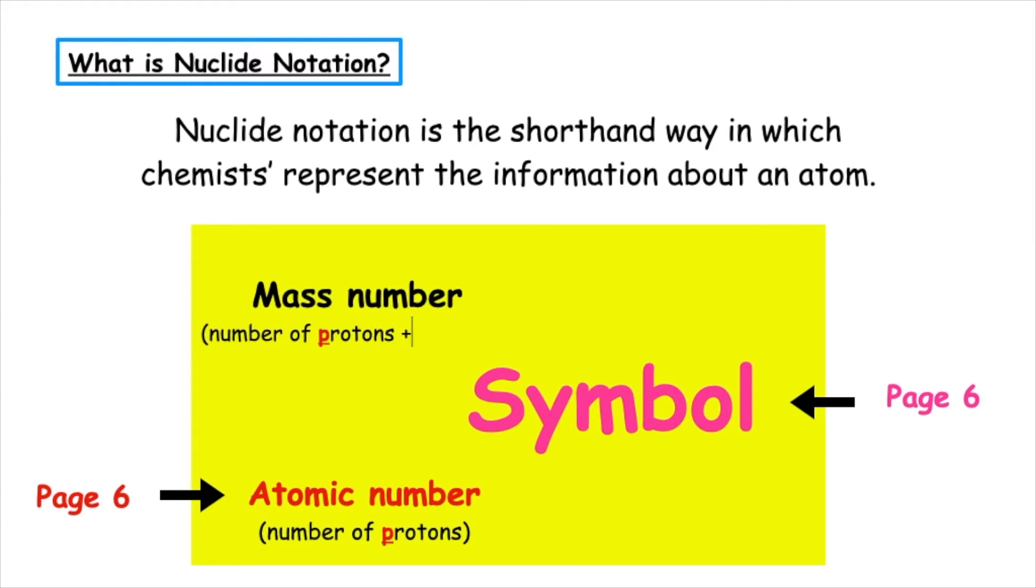The mass number is the number of protons and neutrons, which can be found on page 7, or can be calculated when you are given the number of protons and neutrons.